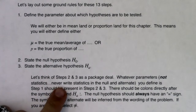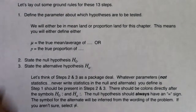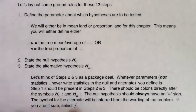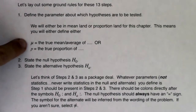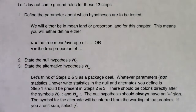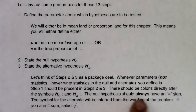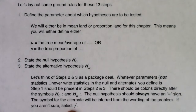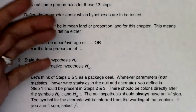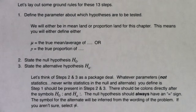You're always going to state your null and your alternate — think of steps two and three as a package deal. You're always going to use parameters in your null and your alternate; you will never use statistics. Whatever parameter you defined in step one, whether it was a mu or a p, I should see it in steps two and three. There should always be colons directly after the symbols H0 and Ha. The null should always have the equal sign, and the symbol for the alternate depends on the wording of the problem. If you aren't sure, select the not-equals-to alternate. When you select a not-equals-to alternate, your p-value would be twice as large as a one-sided test — meaning you're less likely to reject the null. It's just playing it safe.